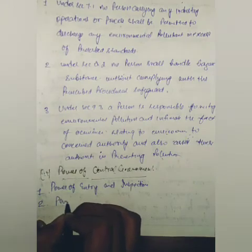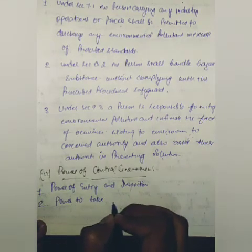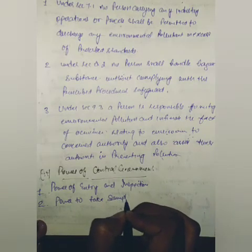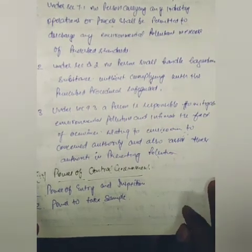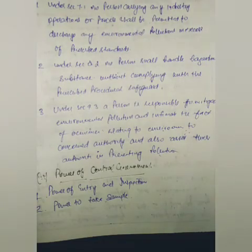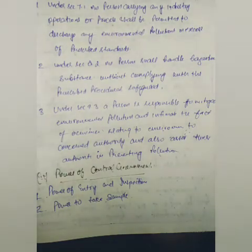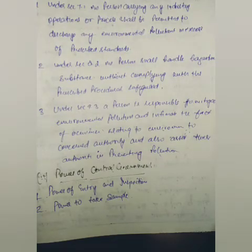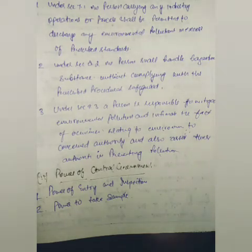The second power is the power to take samples. They can take a sample of any substance for testing and get it tested in a laboratory. Under Section 11, the central government and its officers have the power to take samples of air, water, soil, or substances from a factory or place for analysis according to standard procedure — giving notice to the occupier or their agent, collecting the sample in their presence, and placing it in a sealed container signed by the officer and the occupier or agent.